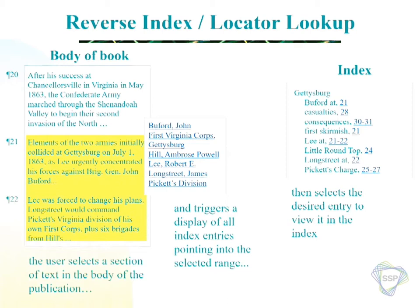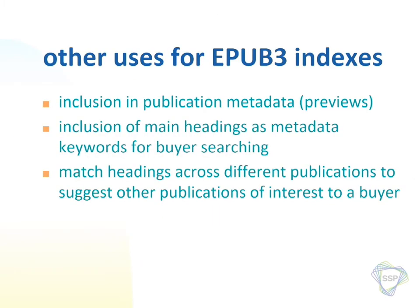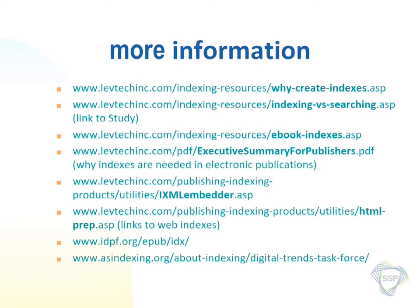The other uses of EPUB 3 indexes: it provides a way for all indexes to be encoded the same way, so there are other things you could do across publishers or across books. Using the metadata for previews, much like on Amazon. Using the headings as metadata in your Onix information. Or even letting users match headings between two books to see if they have a high enough percentage of matches — if I like this book, I'll like this other book. So here's a bunch of links, which are on the handout — come see me if you don't have one.